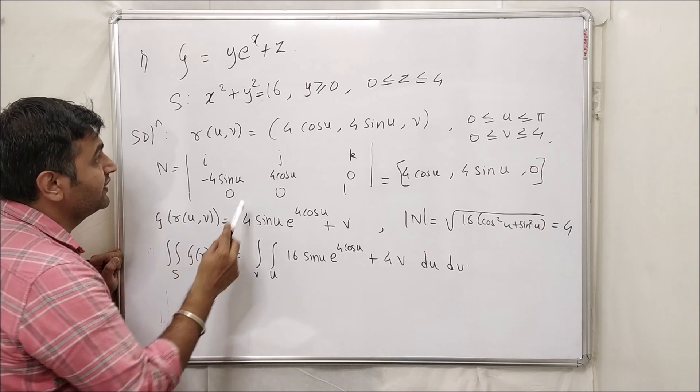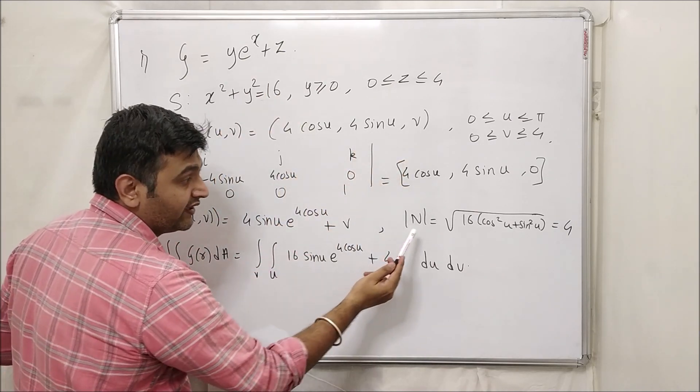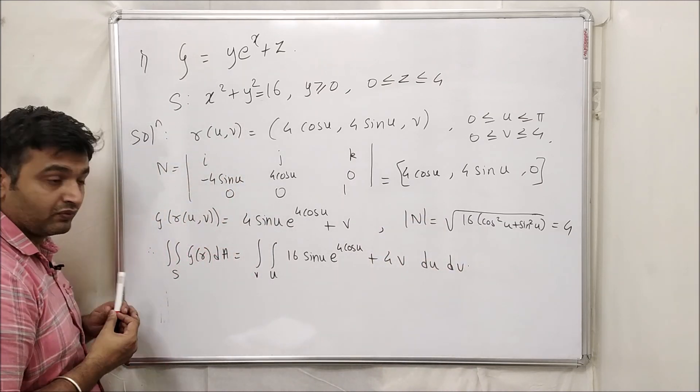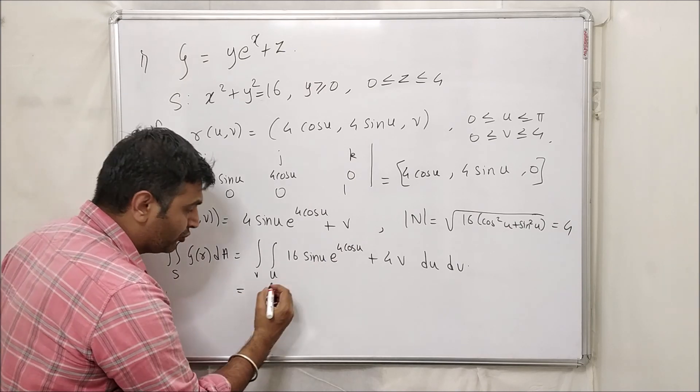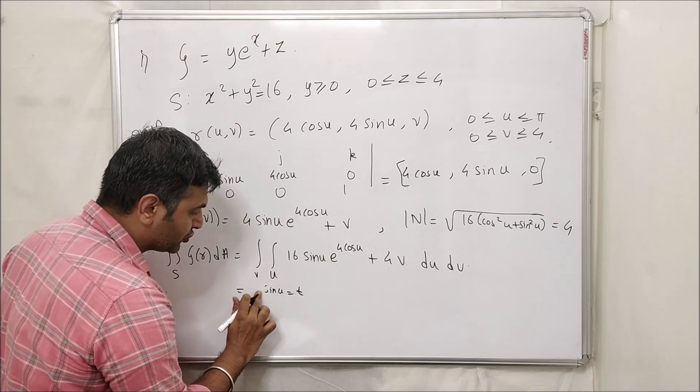Then you find g of r of u v. So wherever you have xyz you replace by these terms. You find the mod of the normal vector which is 4, do the normal multiplication. This is what you have now. You split this, so you know how to solve this integral. You put your sin u equal to t. Sorry, you put your cos u equal to t.